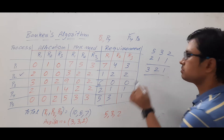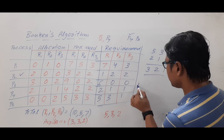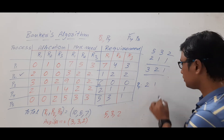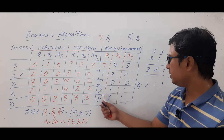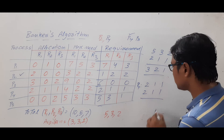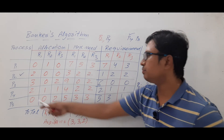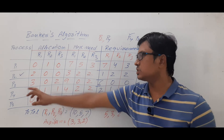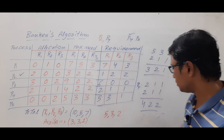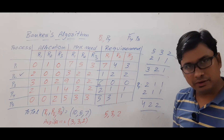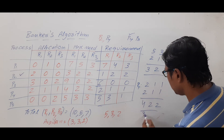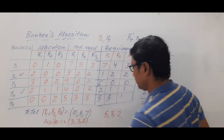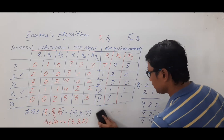Allocating to P4: current availability is 5, 3, 2, we allocate 2, 1, 1, leaving availability 3, 2, 1. P4's previous allocation was 2, 1, 1; adding 2, 1, 1 gives a new total of 4, 2, 2, which matches P4's max need. P4 completes and releases 4, 2, 2. New availability: 3, 2, 1 + 4, 2, 2 = 7, 4, 3.